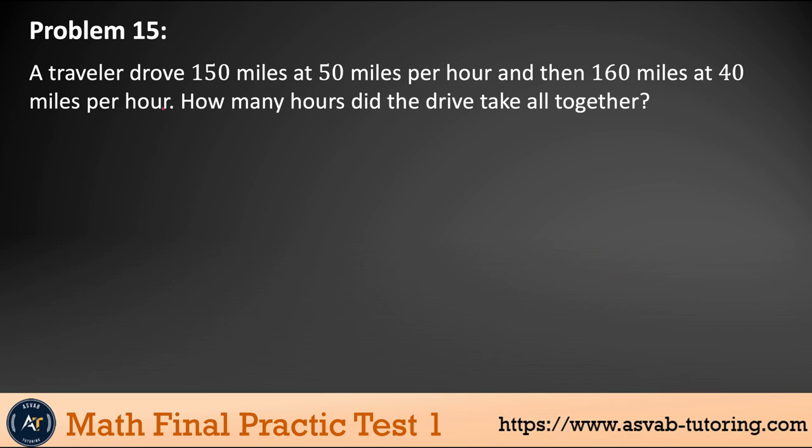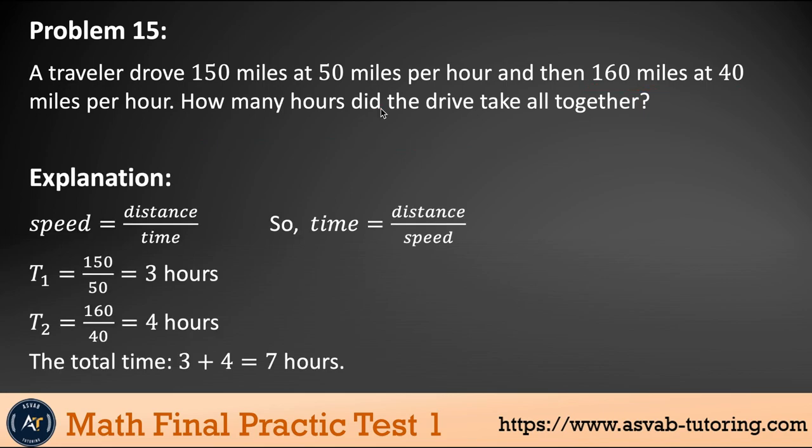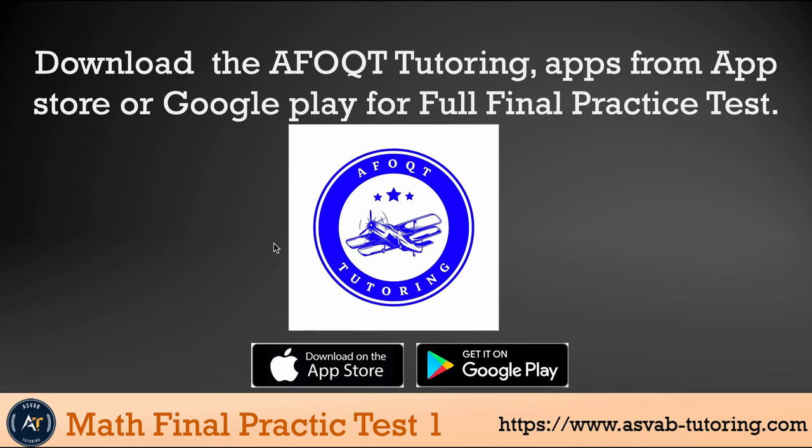Next problem: A traveler drove 150 miles at 50 miles per hour, and then 160 miles at 40 miles per hour. How many hours did the driver take altogether? This problem, a lot of times you see in the actual test. The first, what you have to do—how long it take 150 miles if you drove at 50 miles an hour? T1 is 150 divided by 50, that gives you three hours. T2 will be 160 divided by 40, gives you four hours. This is the formula to find the speed: distance over time, or time equals distance over speed. If you add them up, that gives you seven hours. Download this application and subscribe the online course—it has everything you need for your officer candidate test prep.